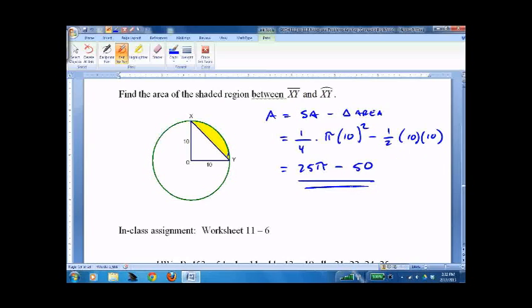No, we can't combine that. I could factor out the 25 and make it 25 times pi minus 2, but there's really no point. Either answer is fine.